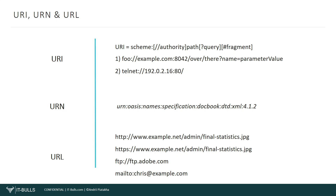To sum up the differences between URI and URL: URL is a subset of URI that specifies where a resource exists and the mechanism for retrieving it, while URI is a superset of URL that identifies a resource. The main aim of a URL is to get the location or address of a resource, whereas the main aim of a URI is to find a resource. URL contains components such as protocol, domain, path, and query parameters, while URI contains components like scheme, authority, path, and query.